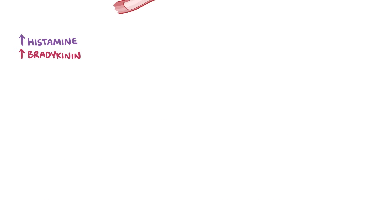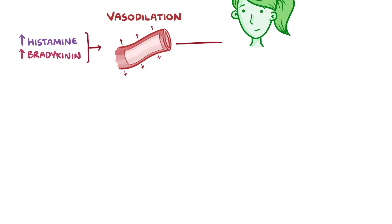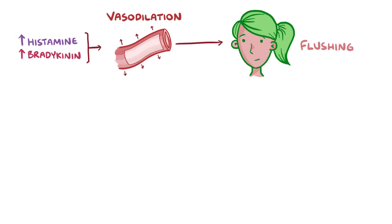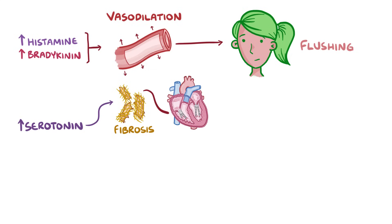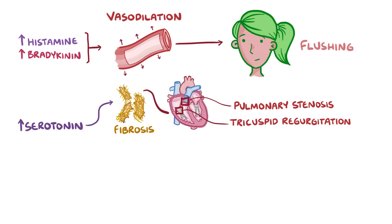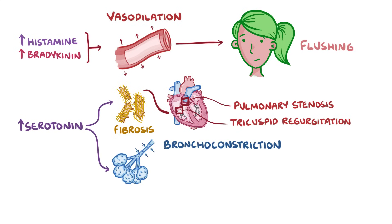When we get increased histamine and bradykinin, this can cause vasodilation, which leads to flushing, while histamine can also cause itching. Increased serotonin can cause thickening of the collagen and fibrosis, particularly in the heart valves, which can lead to heart dysfunction, like tricuspid regurgitation and pulmonary stenosis. In the airways, it can cause bronchoconstriction, and this leads to asthma, shortness of breath, and wheezing.